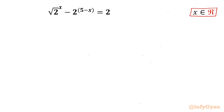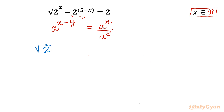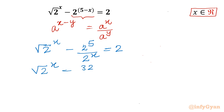Let's get started by writing one exponent law which I will use here. It is: a to the power x minus y, we can write as a to the power x divided by a to the power y. Applying this property, our equation becomes: square root of 2 to the power x, minus 2 to the power 5 divided by 2 to the power x, equal to 2. Now 2 to the power 5 is 32, so we write: root 2 to the power x minus 32 over 2 to the power x, equal to 2.